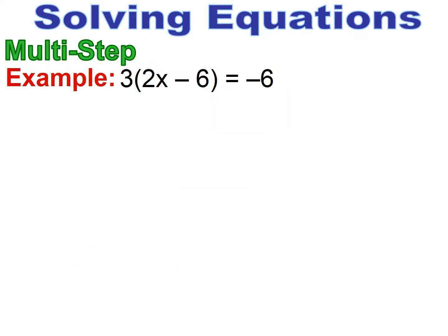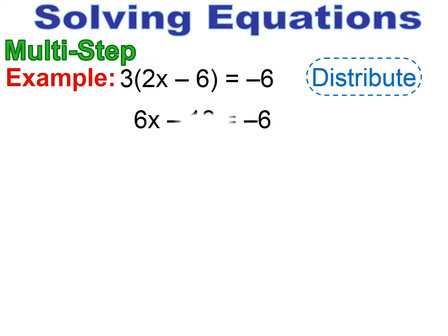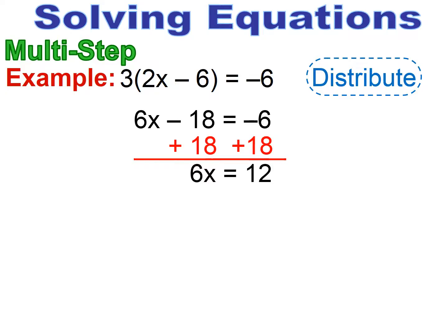Now we see the distributive property. Do the distributive property first, then solve the equation. I distribute that 3 to everything inside the parentheses — make sure you check your multiplication. 3 times 2 is 6, so it's 6x; 3 times 6 is 18, so it's minus 18. Now I do the two-step equation: I add 18 to both sides, then divide both sides by 6, and I get x equals 2.